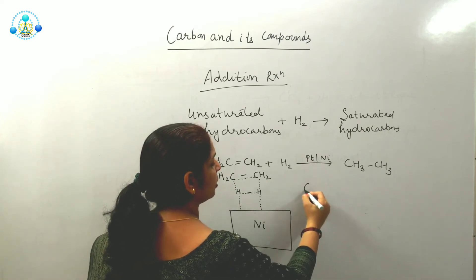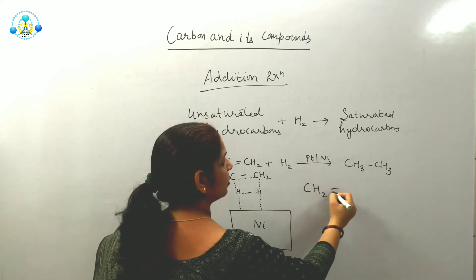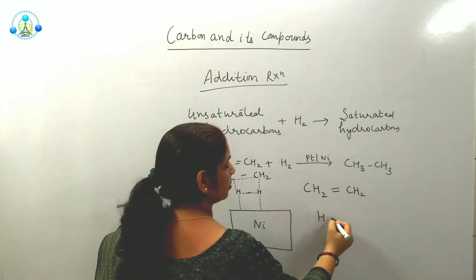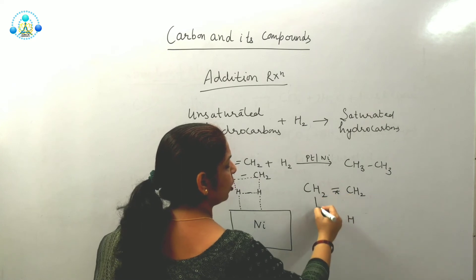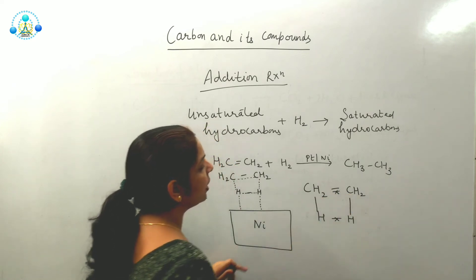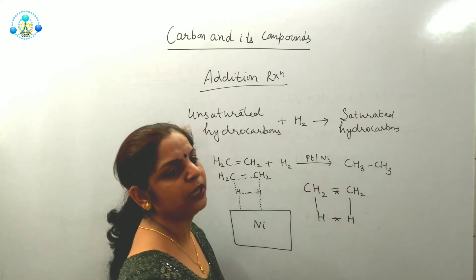What we are doing here, we are having ethene. We are having hydrogen. Two bonds we are breaking and two bonds we are forming. It leads to formation of ethane.